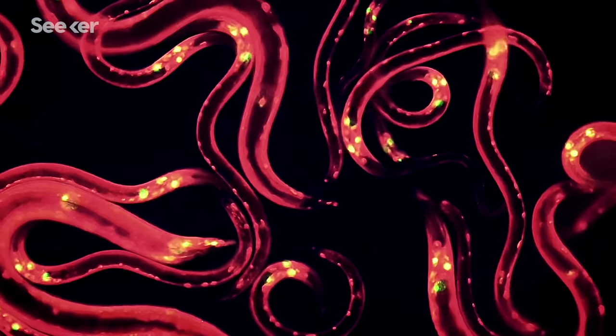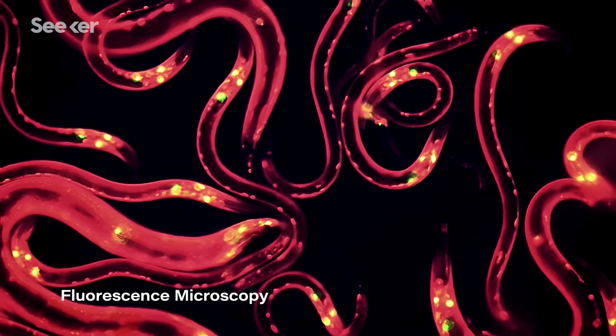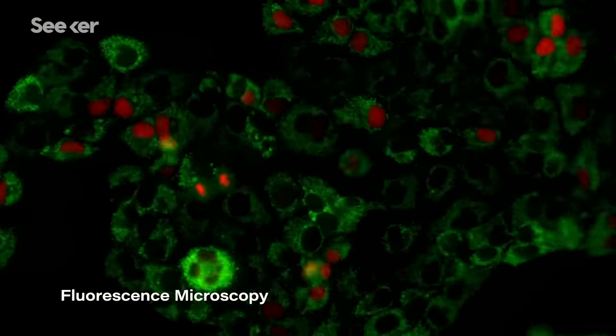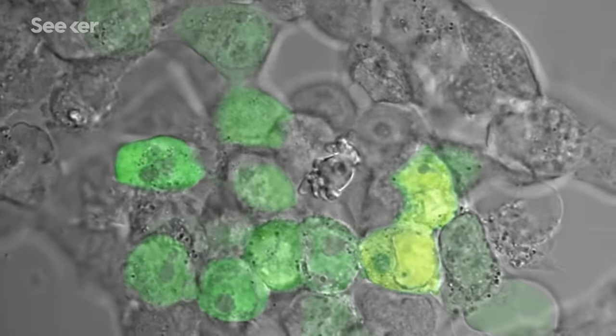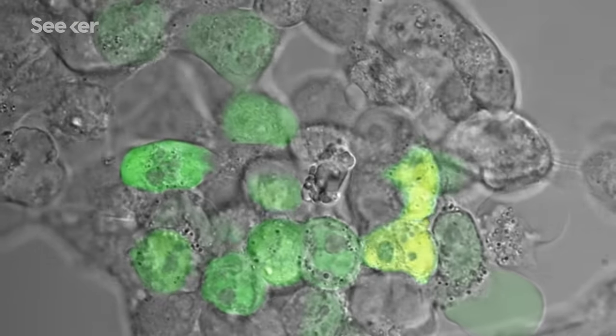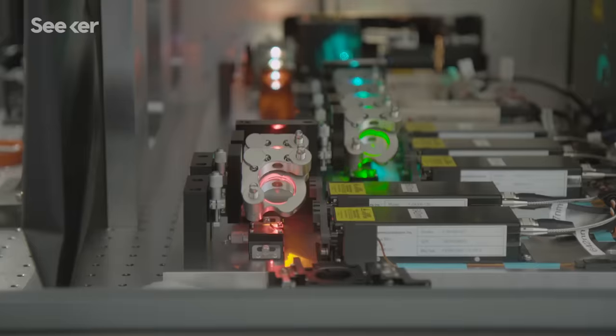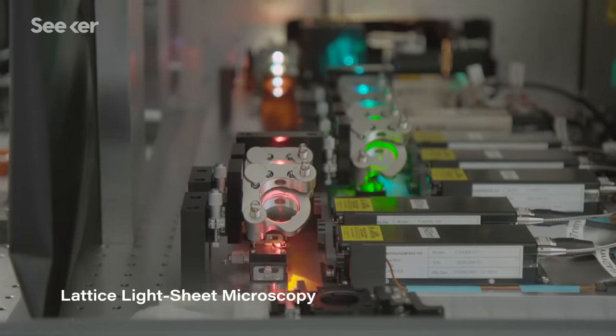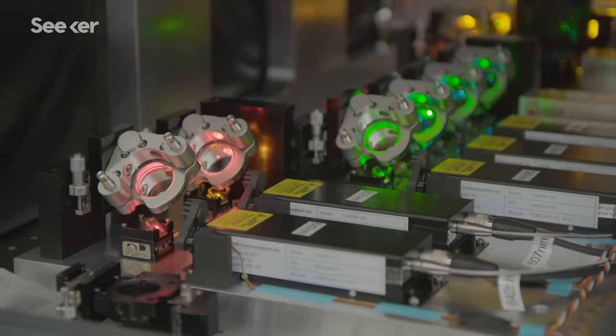One of the ways scientists image these dynamics is with fluorescence microscopy. However, harsh light from this technique can cause phototoxicity, meaning the cell can get sick during the imaging session. Lattice light sheet microscopy was invented a few years ago to correct for that challenge.